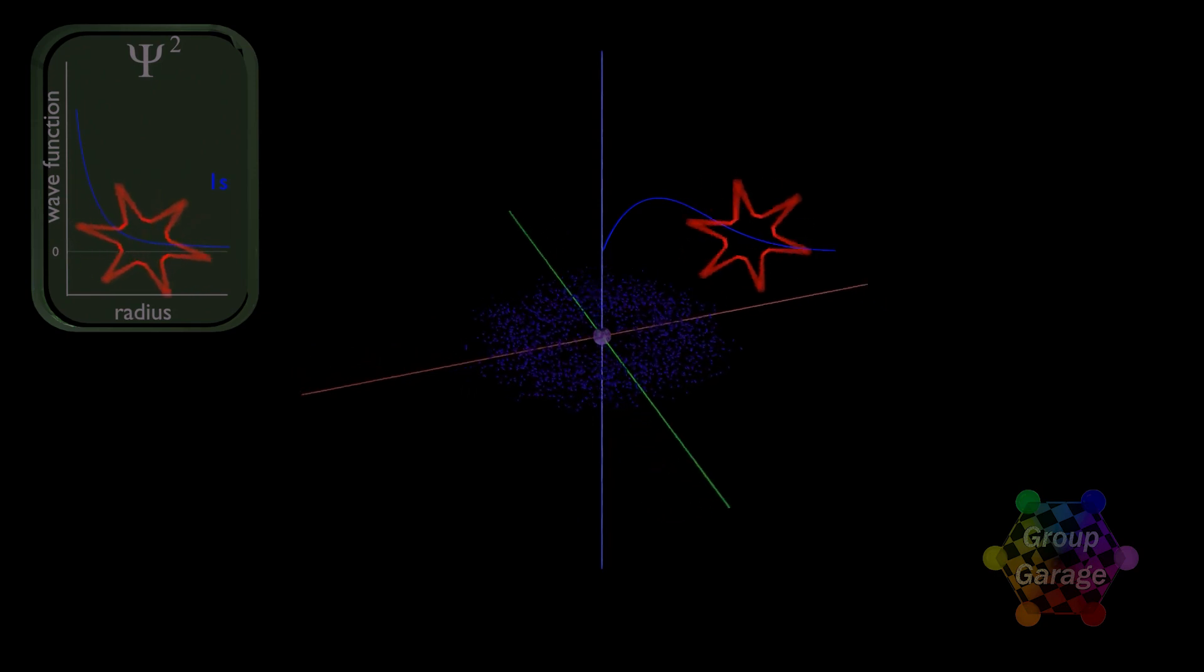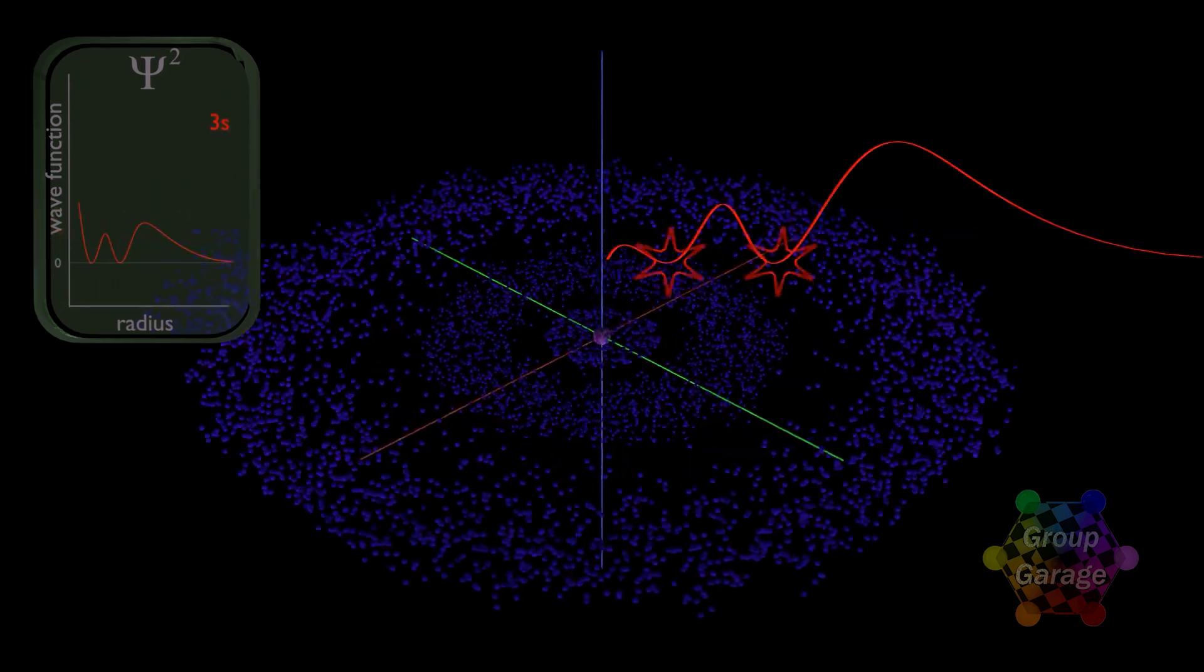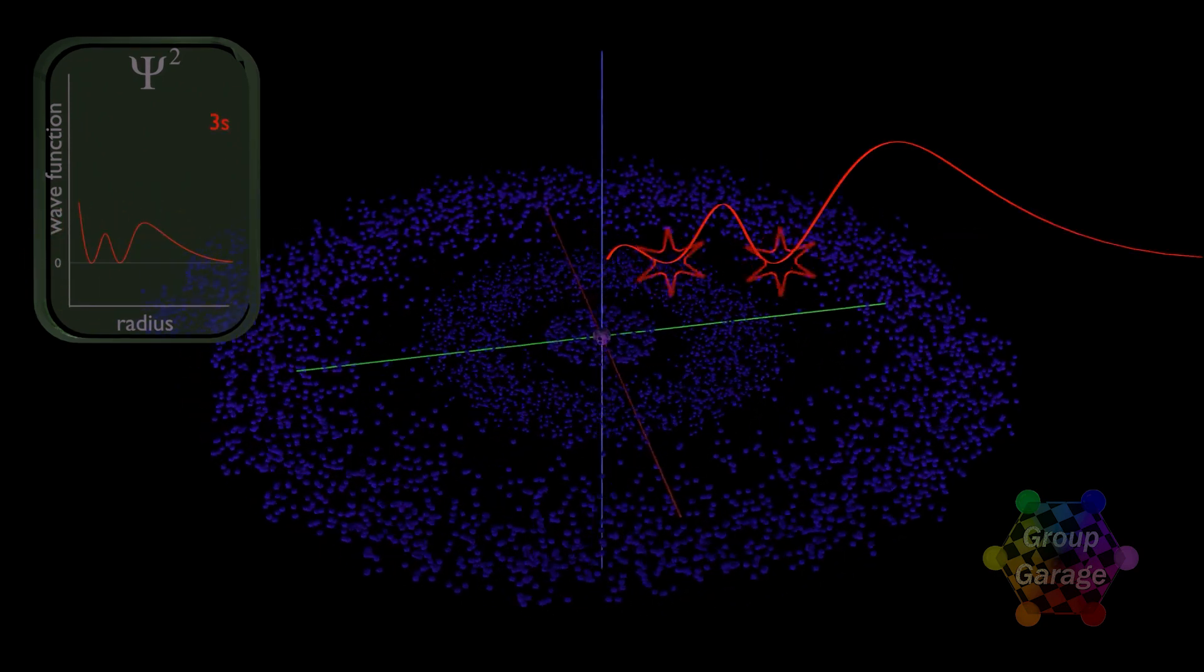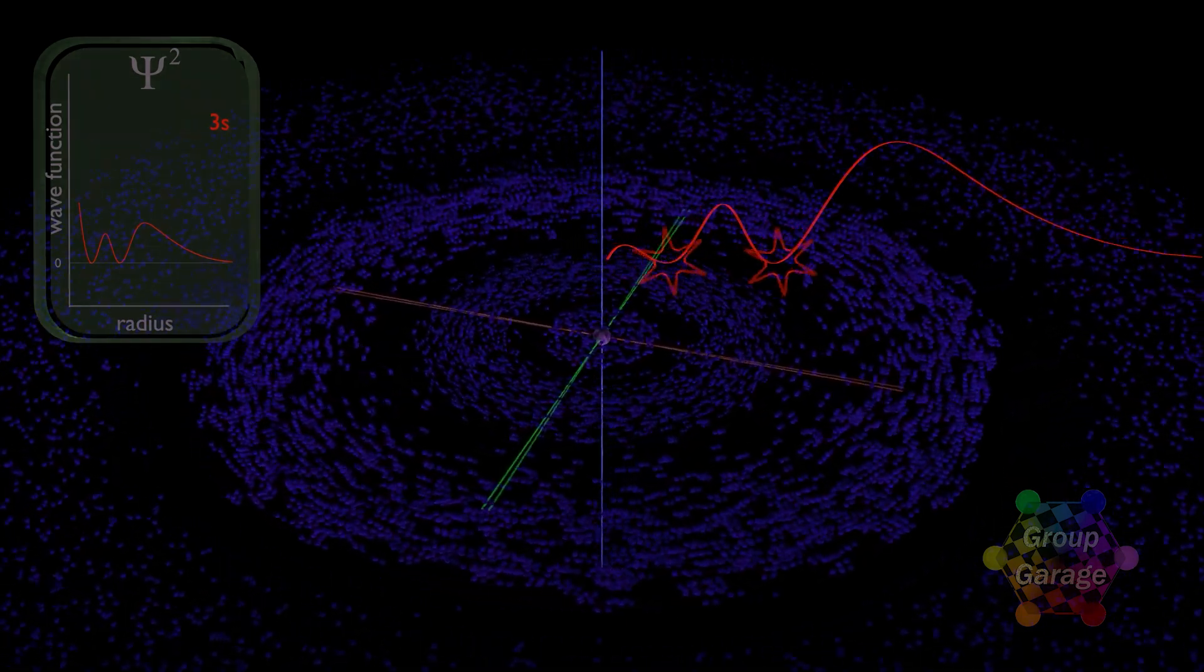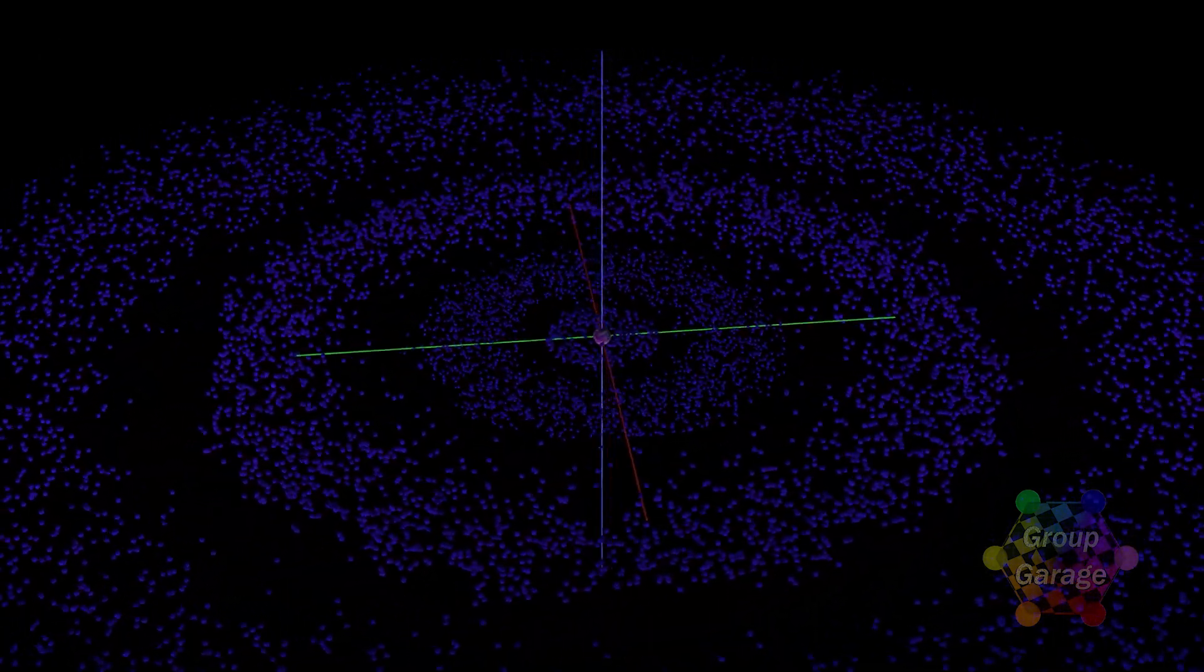Remember, 1s has no node, 2s has one node, 3s has two nodes. You should be able to guess now, how the 4s radial probability looks, and how many nodes there will be.